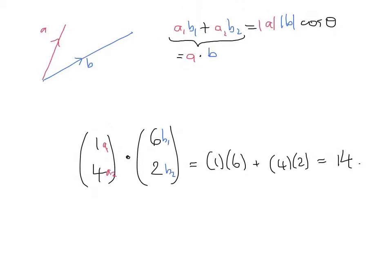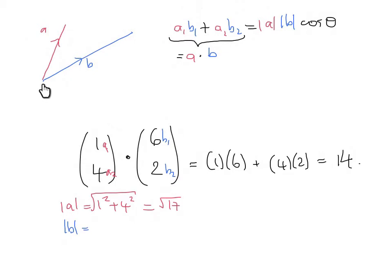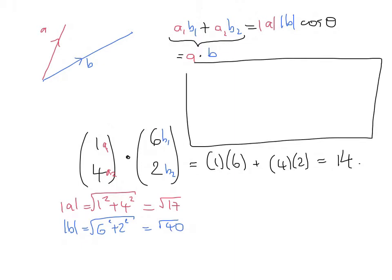What about the right-hand side of the equation? The length of a is the square root of the i component squared plus the j component squared. So in this case, that's the square root of 1 squared plus 4 squared, which is root 17. The length of b is 6 squared plus 2 squared, square rooted, which is root 40. So putting all these ingredients together, the formula tells us that a dot b — which we know is 14 — equals root 17 times root 40 times the cosine of the angle between them.